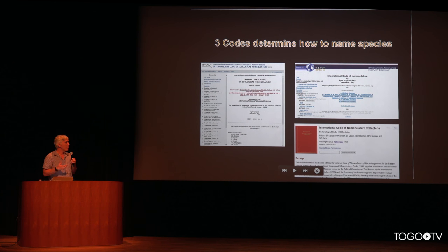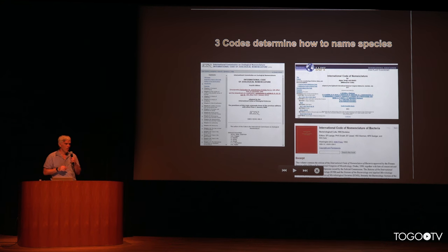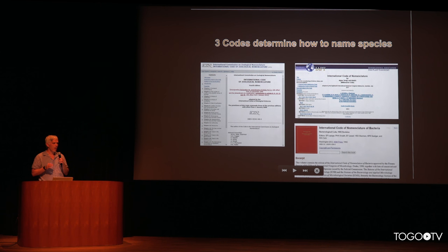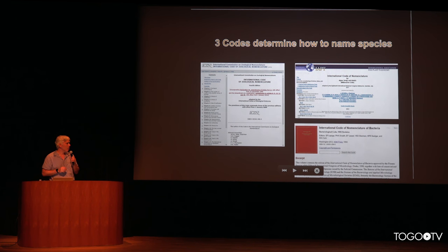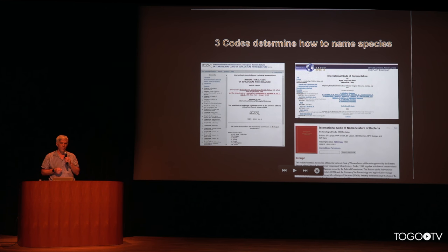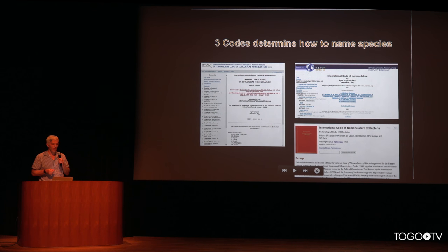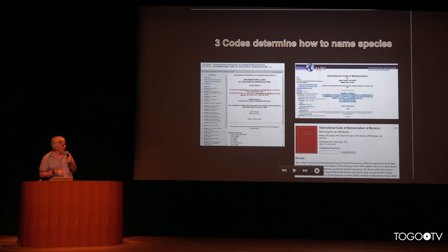The way that species are described relies on a very intricate set of rules, and these rules apply to different sets of organisms. Taxonomists and curators at the taxonomy database rely on three main codes. These codes intricately describe how you describe a species, in what cases a name is correct, and when it's incorrect — it's almost like a set of laws. We have a specific code for animals, a zoology code, a code for fungi, algae, and plants, and then a code for prokaryotes. There's also a list of names for viruses, which is a more informal structure. We regularly interact with the ICTV, the International Committee for Virus Taxonomy.